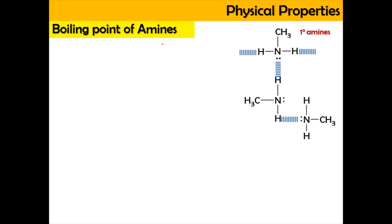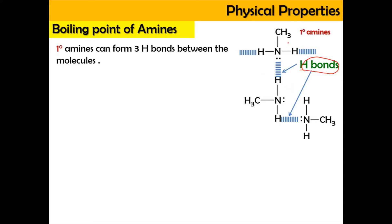For the boiling point of amines, we're going to explain them in terms of the number of hydrogen bonds. Every class of amine will have a different number of hydrogen bonds. For the primary amine, which attaches with one alkyl group, one molecule of primary amine can form three hydrogen bonds between molecules of the same primary amine.